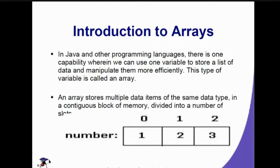An array stores multiple data items of the same data type in a contiguous block of memory divided into a number of slots — just like a stack in your data structures, wherein it is divided into blocks or slots. There is a corresponding address or index for the possible allocation of the data.